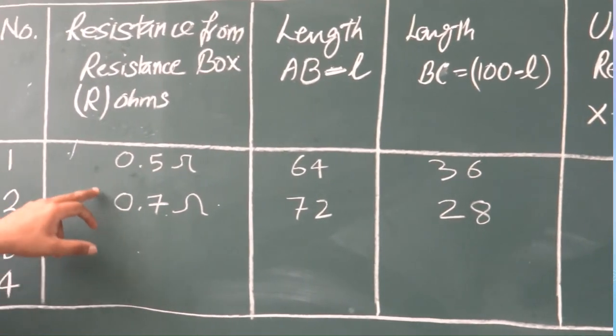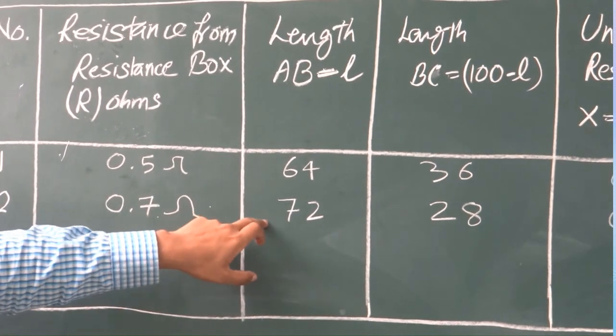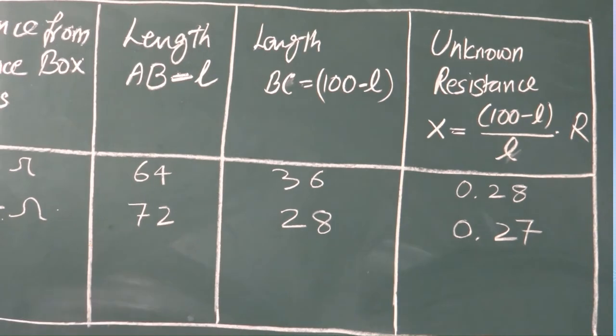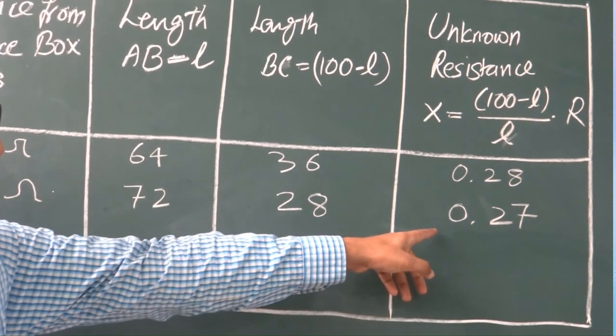Next, let's suppose for 0.7, the reading comes out to be 72. Then the corresponding 100 minus L would be 28, and this gives you the value as 0.27.